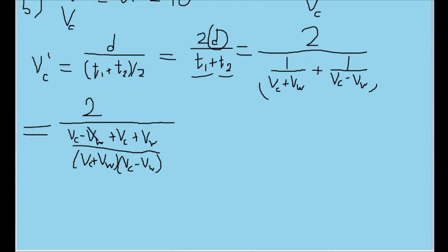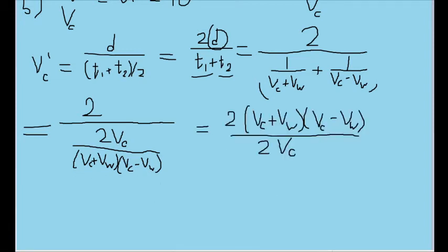You should end up with something like this. We can pretty easily see that these v_w's will cancel out, and this v_c plus v_c can be written as 2 v_c. Let's also take this large term at the very bottom and bring it up into the numerator. Now we can see that these 2's will cancel out as well.